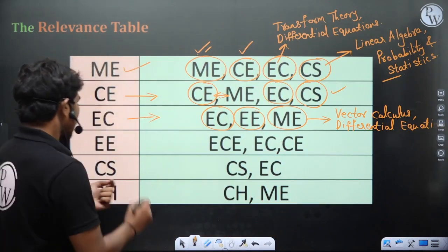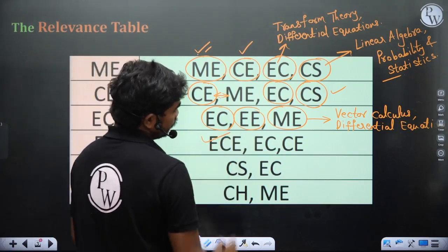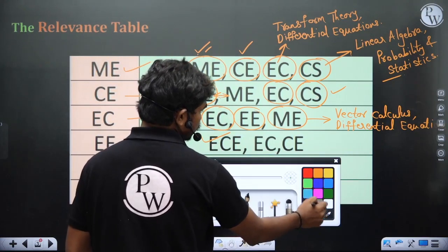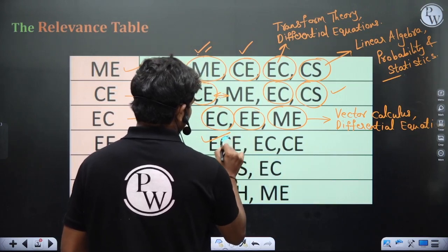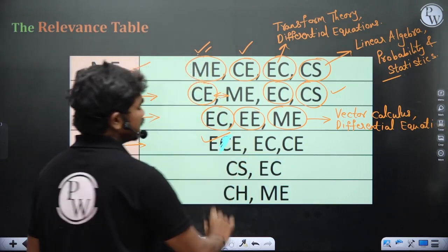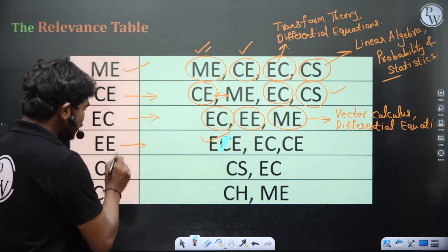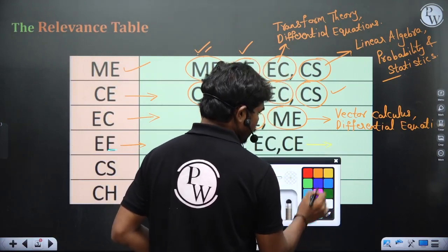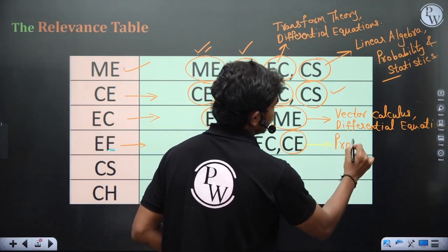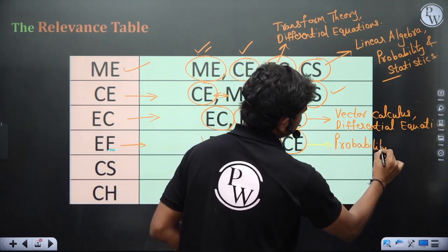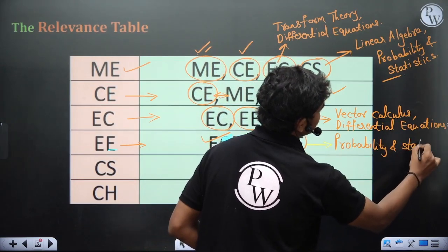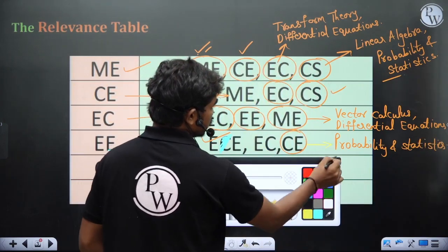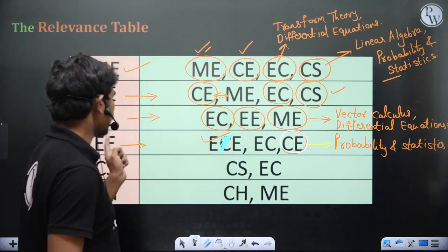Coming to electrical engineering — I made a small error here, this should be EE (electrical double E), not EC. So please remove that 'C.' For EE, one thing that matches with EC papers is questions from probability and statistics. Specifically, the statistics part from EC questions is very much relevant to EE. So you can go with EC probability and statistics questions in order to prepare for EE.